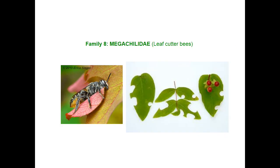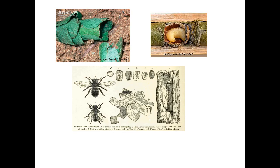Next is Megachilidae — leaf-cutter bees. They are solitary bees. Mandibles are sharp and scissor-like. Pollen is gathered through hair scopa present on the venter of the abdomen — there are hair-like structures on the ventral region that collect pollen. They cut semi-circular pieces of leaves, mostly from roses, and occasionally from other plants. These leaf pieces are used for preparing the nest. Provision for the brood consists of a mixture of pollen mixed with honey.